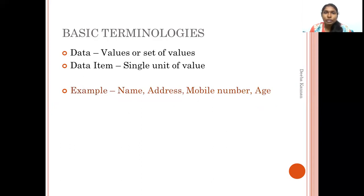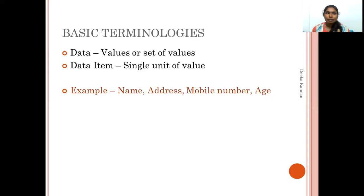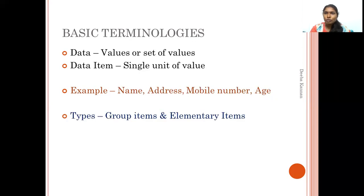Now, there is a data item. A data item is a single unit — for example, name, address, mobile number, age. These are individual items. If we look at a single item like age, it is just a number. But if we look at address, it can be broken into door number, street, city, country, etc. So there are two types of items: group items and elementary items.